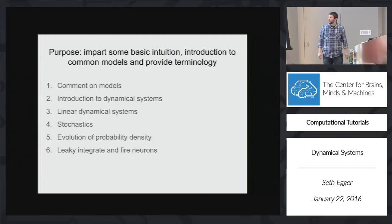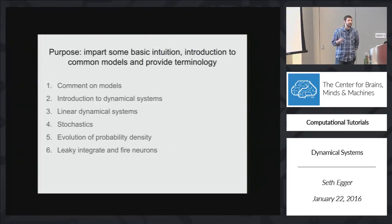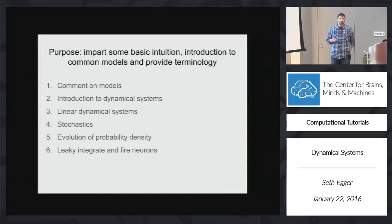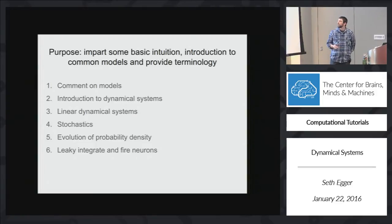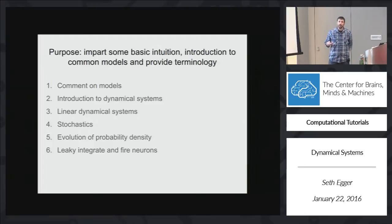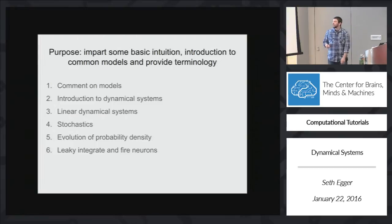So just a brief outline of what I'm going to talk to you about today. First, I'm going to have a brief comment on models and how we should think about them, because I feel sometimes people really don't understand what a model is really used for. Then I'm going to introduce dynamical systems in general and follow that with a discussion of linear dynamical systems. Then I'll introduce a more advanced topic, which is stochastics, and look at how the probability density of a given variable will evolve over time. And then I'll talk about a specific model that has become useful in neuroscience.